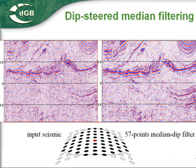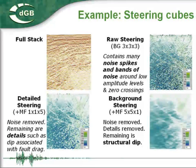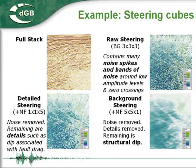Dipsteered filtering works best when you use a heavily-filtered steering cube. We call such a steering cube a background steering cube, as it primarily contains dip-azimuth trend information. A steering cube created with the default setting that is optionally mildly filtered to remove noise is called a detailed steering cube. Smoothing of the detailed steering cube yields the background steering cube that is used in dipsteered filtering.